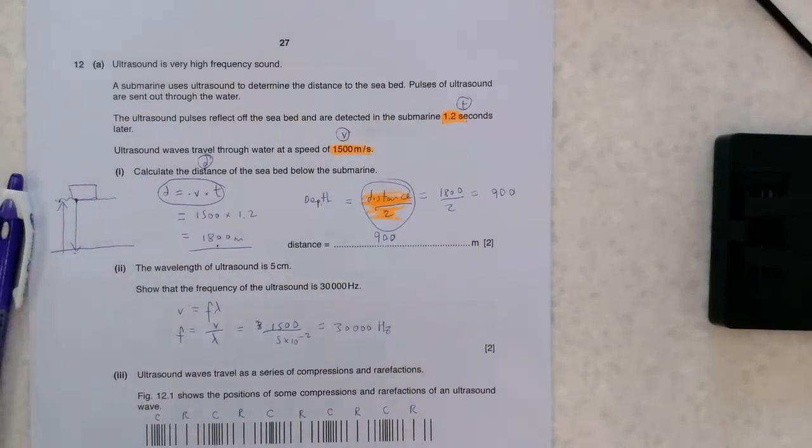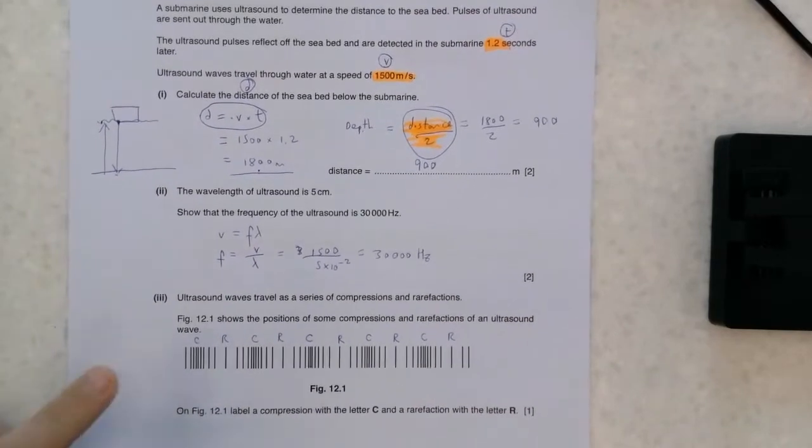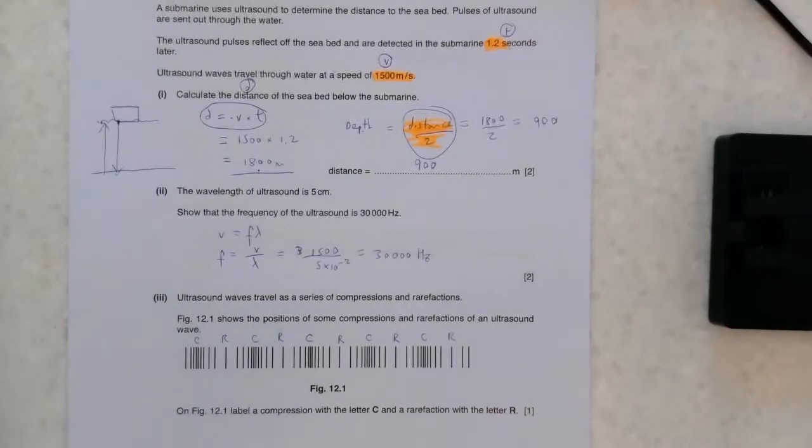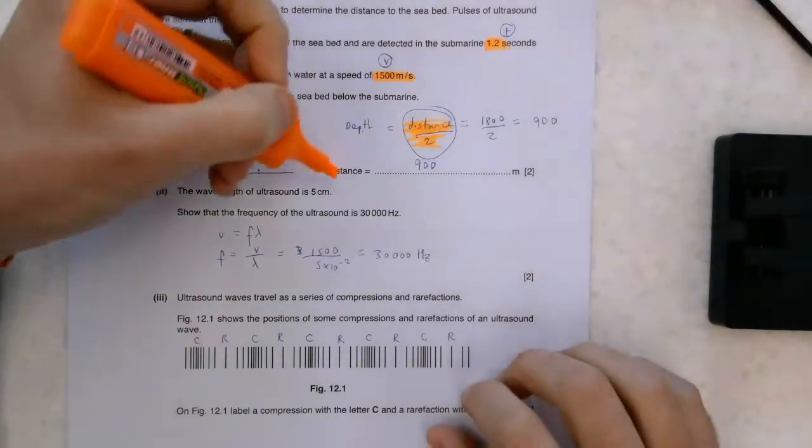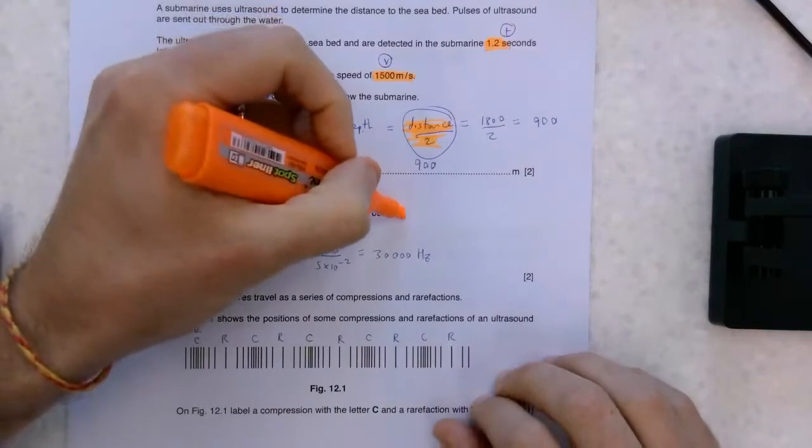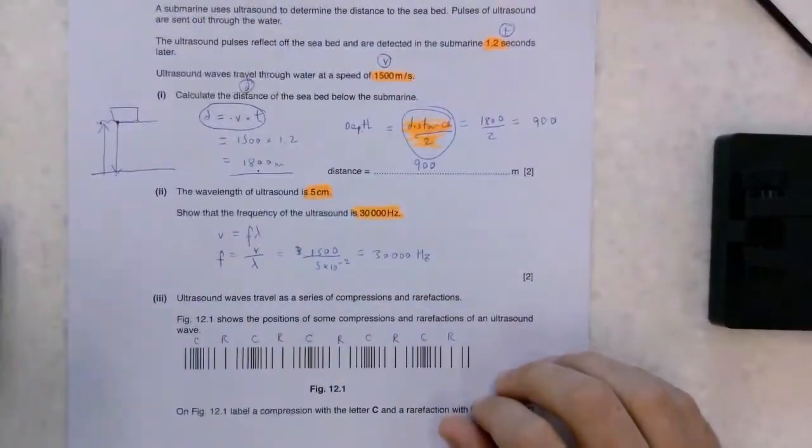Okay. We're told the wavelength of our ultrasound. See how we're combining different units together. We've gone from distance and time suddenly to V equal F lambda. You're told the wavelength, 5 centimetres, and you're told the frequency, and this is something you've got to prove.